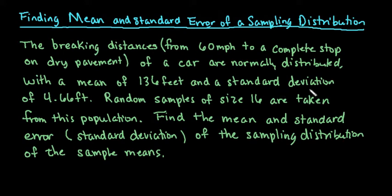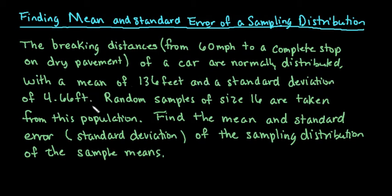For this video, I want to discuss how we find the mean and standard error of a sampling distribution using the central limit theorem. In this situation, the braking distance of a car is normally distributed with a mean of 136 feet and a standard deviation of 4.66 feet. Random samples of size 16 are taken from this population — find the mean and standard error.